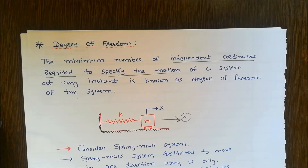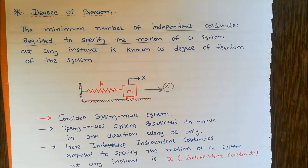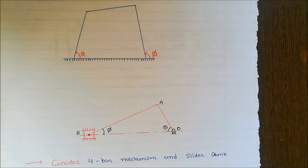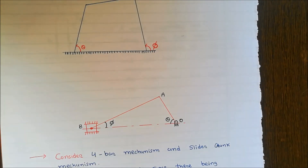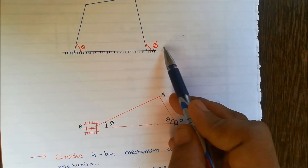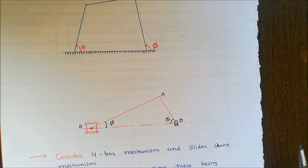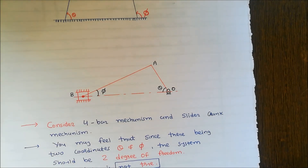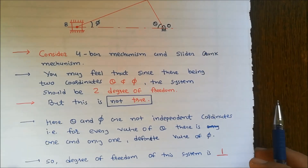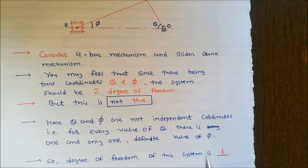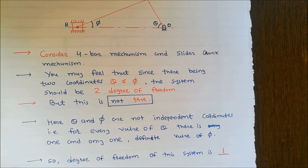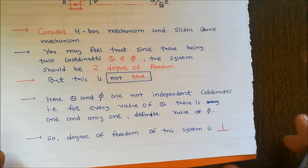To understand the concept of independent coordinates, we consider the four-bar mechanism and the slider-crank mechanism. In the four-bar mechanism, you may feel that since there are two coordinates theta and phi, the system should be two degrees of freedom. Similarly in the slider-crank mechanism there are two coordinates theta and phi, suggesting two degrees of freedom. But this is not true, because theta and phi are not independent coordinates — for every value of theta there is one and only one value of phi. So phi depends on theta and is not an independent coordinate, making the degree of freedom of this system one.